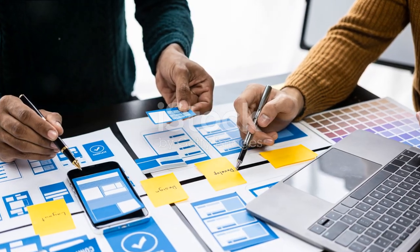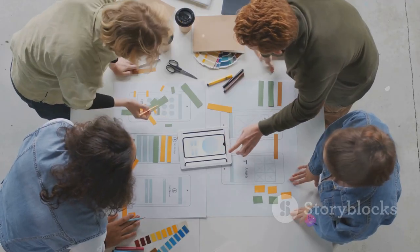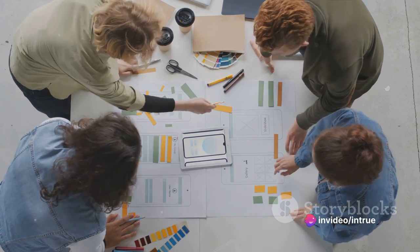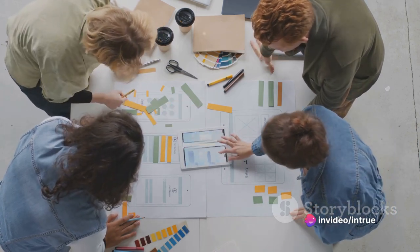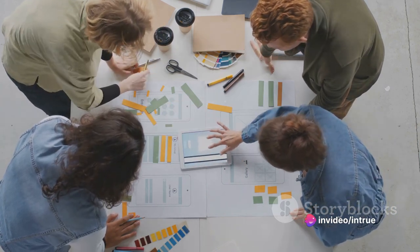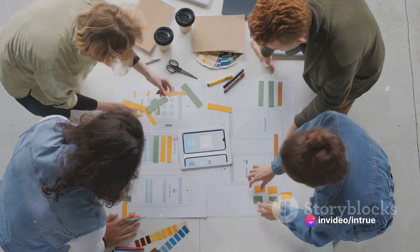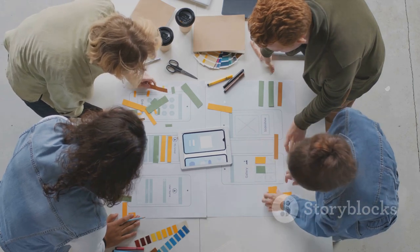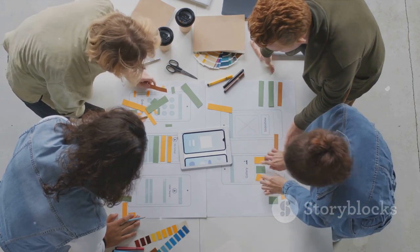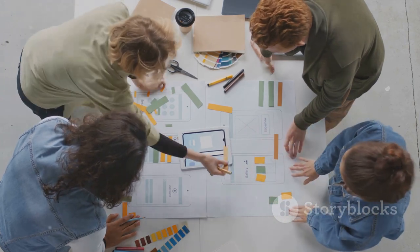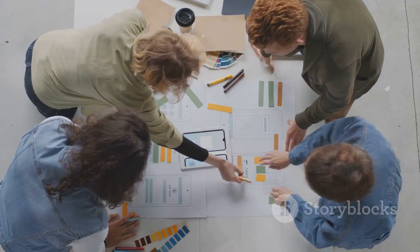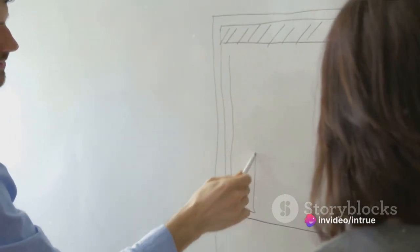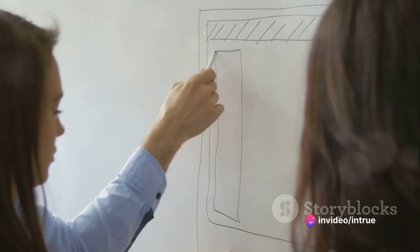But before you even start coding, there's a critical step: brainstorming and planning. This is where you decide what your app will do, who it's for, and how it will look and feel. You'll need to outline the features, sketch the user interface, and plan the user experience. It's like creating a blueprint before you start building a house.